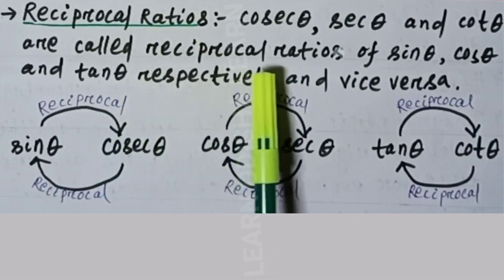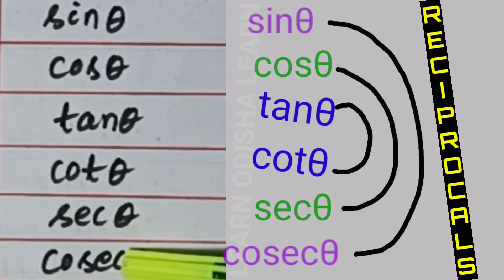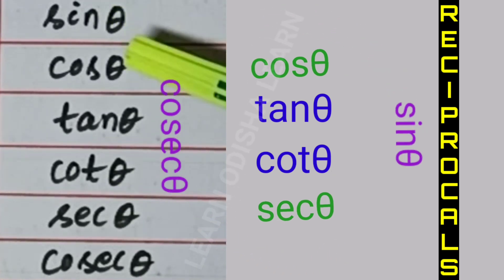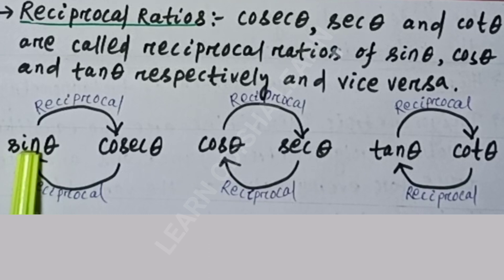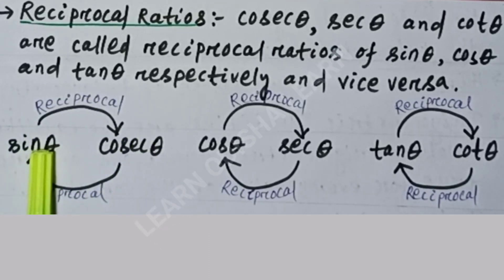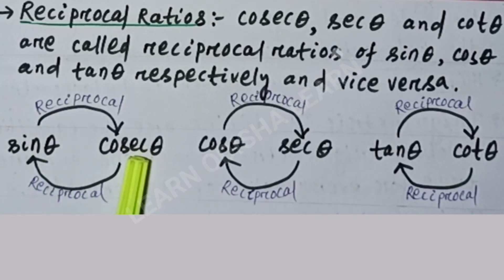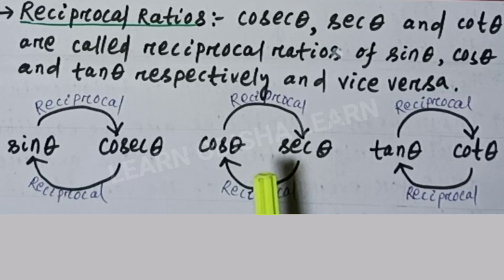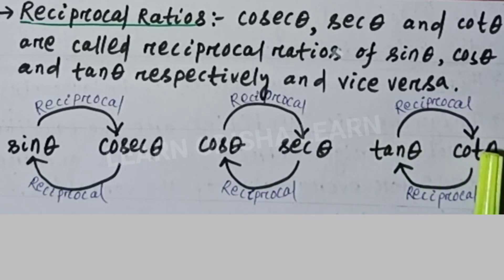Reciprocal ratios: cosec theta, sec theta, and cot theta are called reciprocal ratios of sin theta, cos theta, and tan theta respectively. Sin theta and cosec theta are reciprocal ratios of each other. Similarly, cos theta and sec theta are reciprocal ratios of each other, and tan theta and cot theta are reciprocal ratios of each other.